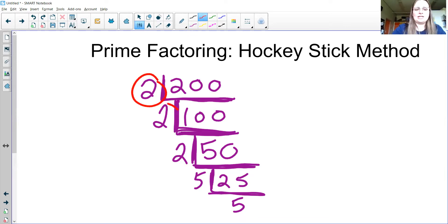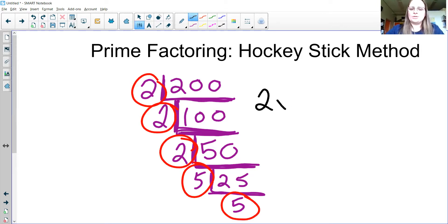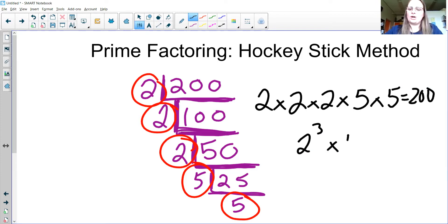So the great thing about prime factoring is these are all your prime factors. You can write this out in expanded form: two times two times two times five times five equals 200, or you can write it in condensed form with your prime factors written as powers, 2³ × 5² = 200.